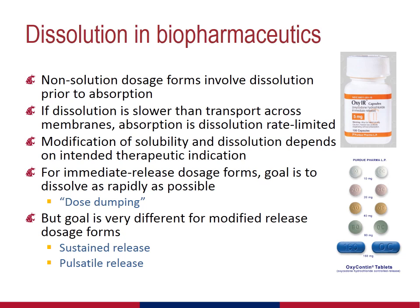Let's look at an example. Narcotic analgesics such as oxycodone are commonly required by palliative patients for the purpose of pain control. For this application, two different dosage forms of the same narcotic are required. One, an immediate release dosage form, is needed to treat acute pain by releasing the narcotic as rapidly as possible. This process is sometimes known as dose dumping.